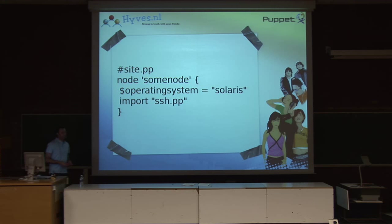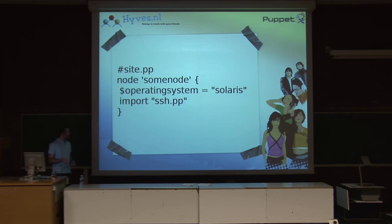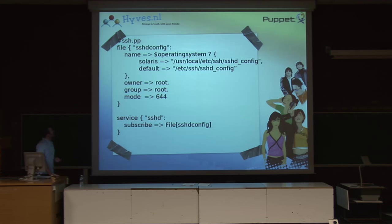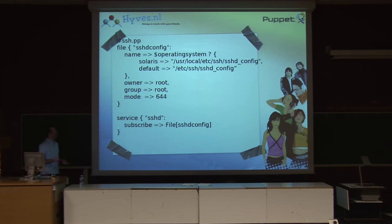This is an example of the site.pp file. This is where in Puppet you declare all your hosts that you want to manage. In this example I've called the host 'some node' — normally this will reflect your DNS hostname. You're allowed to use any kind of variables inside your node declaration. In this example I've used the operating system as a variable, and I want to manage SSH on this specific host, so I'm importing the Puppet manifest for SSH. In the actual SSH manifest you can see we're managing the sshd_config file. Here you can see the benefit of being more abstract — you can actually check which operating system you're on. For Solaris you can have a different path than for the default environment, which could be your Linux or BSD machine.